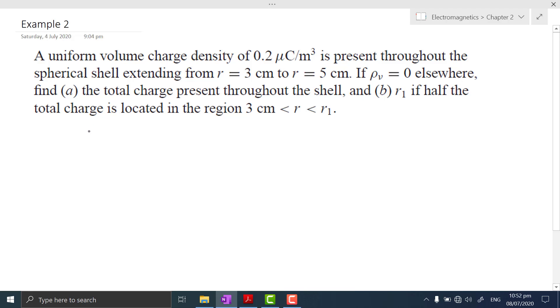We have another problem here for total charge inside a volume adapted from Hayt. A uniform volume charge density of 0.2 microcoulombs per cubic meter is present throughout the spherical shell extending from radius 3 cm to radius 5 cm. If the volume charge density is 0 elsewhere, find (a) the total charge present throughout the shell and (b) R₁ if half the total charge is located in the region 3 cm to R₁.